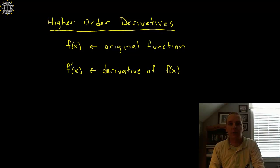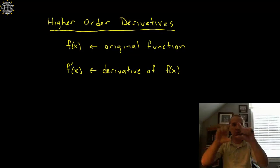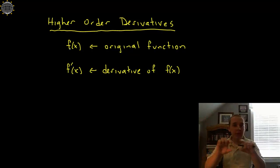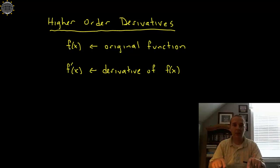If f of x is your original function, the thing we're very comfortable with is taking a derivative — we call it f prime. This gives you the slope of f of x at a given x value. But you have to remember, f prime is just another function related to the original function f, and there's nothing to keep us from taking its derivative.